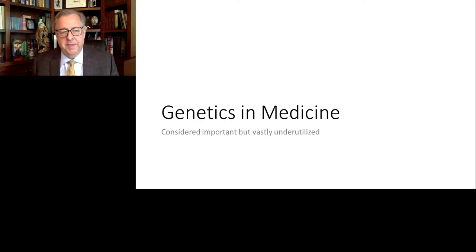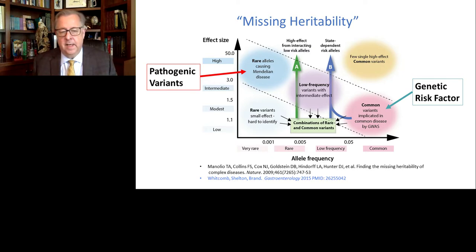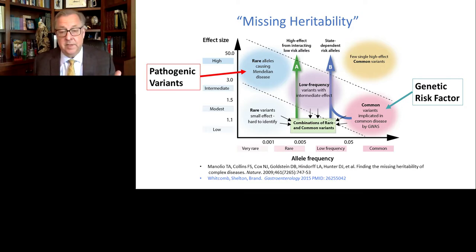We recognize that genetics is important in medicine, but it is vastly underutilized, and there are some reasons for that. Taking a genetic approach, there is a problem called missing heritability, in which there are some genetic mutations that are called pathogenic that cause a rare Mendelian disorder. However, when the genome was completely sequenced, we began to find other associations — genetic risk factors associated with a disease that were actually relatively common, but didn't actually cause the disease; they were just associated with it. That was called the missing heritability.